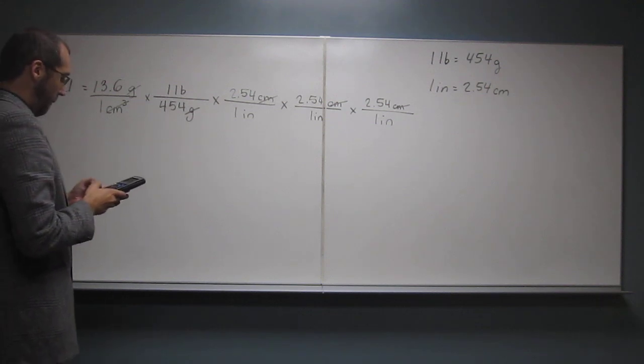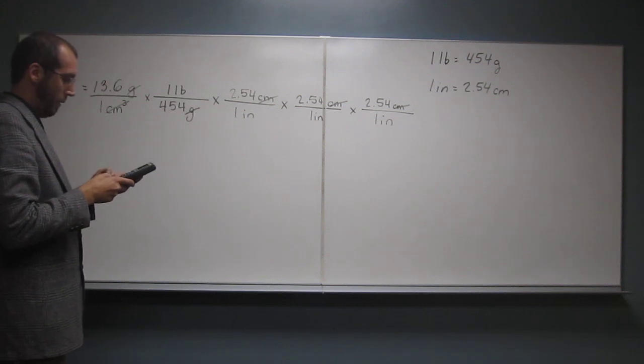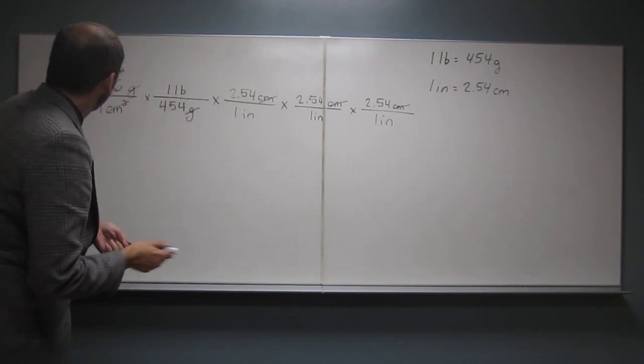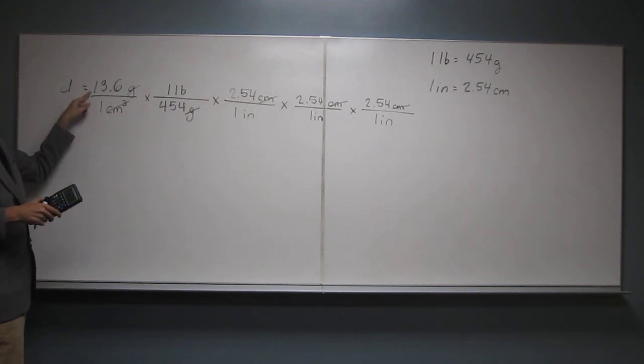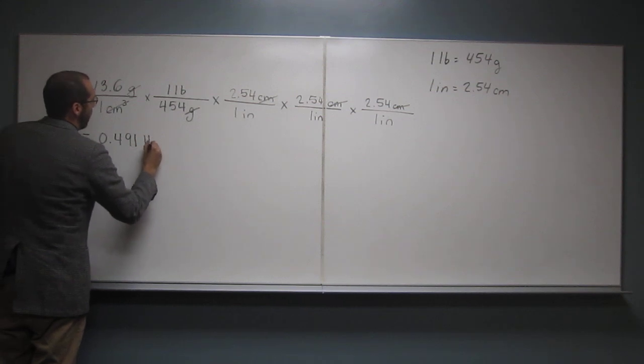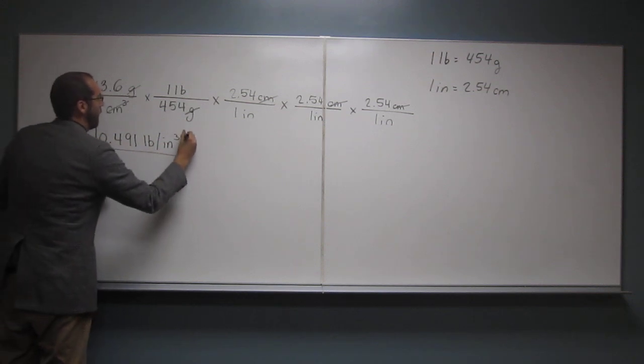So 13.6 times 2.54 times 2.54 times 2.54, okay? And then divide that by 454. And you should get an answer, and we want it to go to how many sig figs? Three, because there's three sig figs here. Okay, so when we do it, I get 0.491 pounds per inches cubed for the density of the mercury.